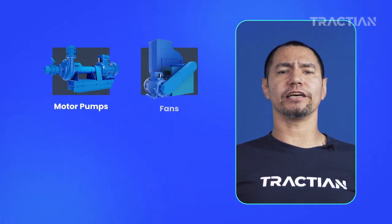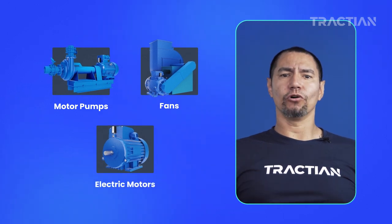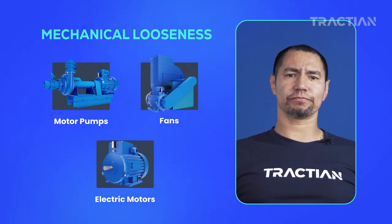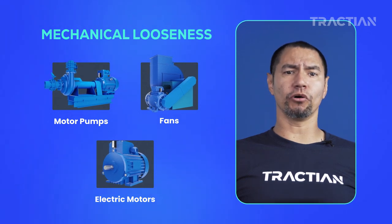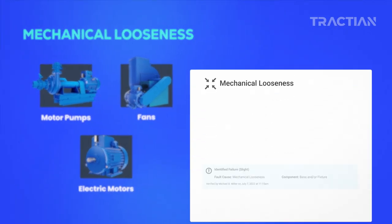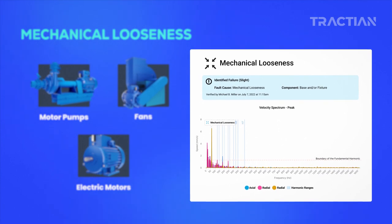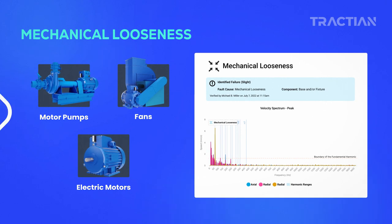Motor pumps, fans, and electric motors — in this equipment we commonly detect mechanical looseness failures. This occurs when there is incorrect contact between components and when there isn't proper distribution of efforts, consequently generating an overload in one of the components causing premature wear.